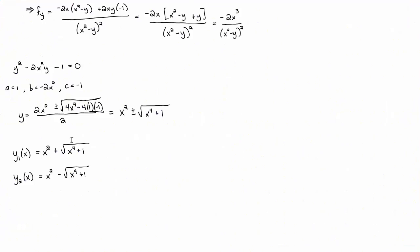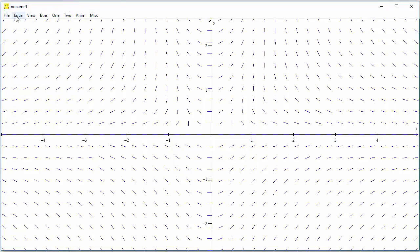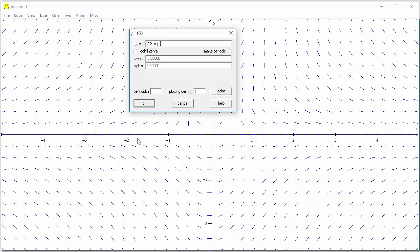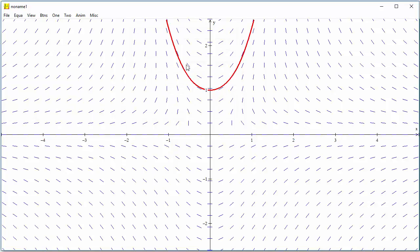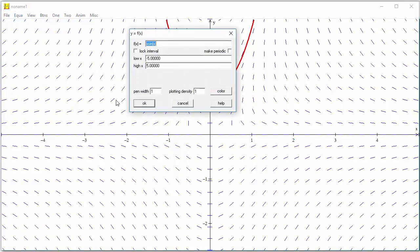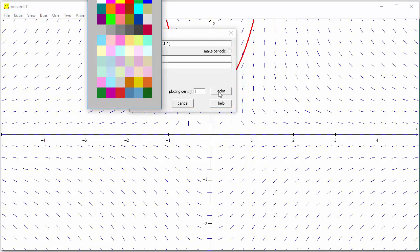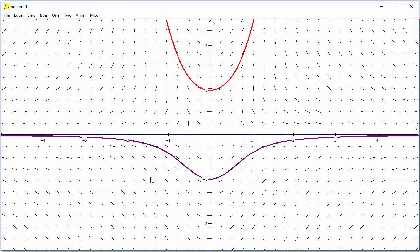And now I'm going to graph both of the explicit solutions. Remember, the explicit solutions were x squared plus or minus the square root of x to the fourth plus one. So let's look at that equation: x squared plus the square root of x to the fourth plus one. I'll make the pen width three so it's a little more vibrant, and I'll do this one in red so we can see it. That's one of them, a nice kind of square looking function. It's not y equals x squared, but it's square looking. And then the other explicit equation would be x squared minus the square root of x to the fourth plus one. I'll make the pen width three and do this one in purple. Two very different looking solutions.